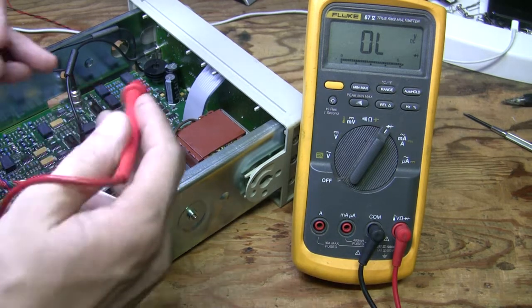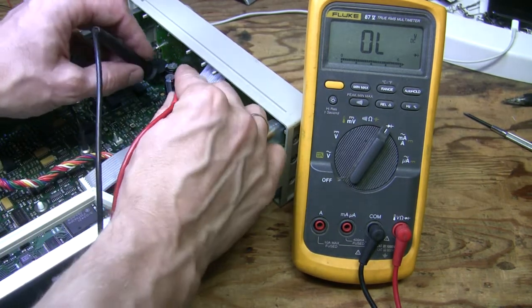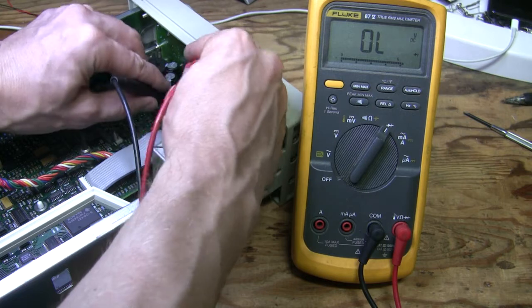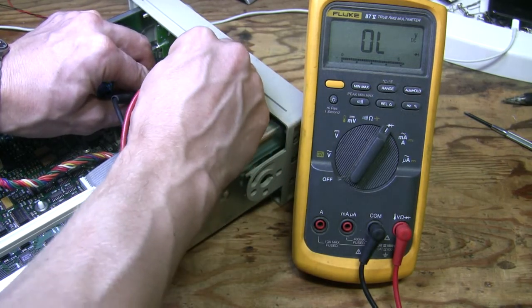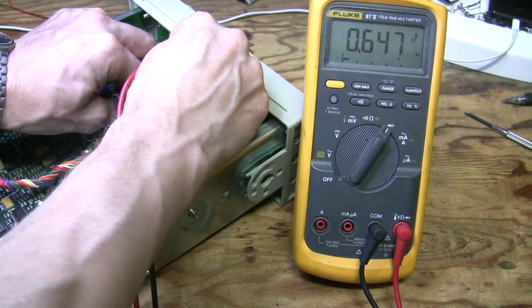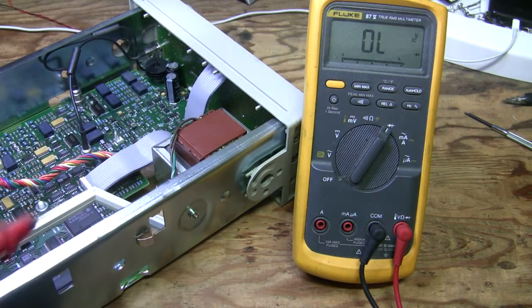And now when transistor is out of the way, I should be able to reach that zener. All right, zener looks fine to me.